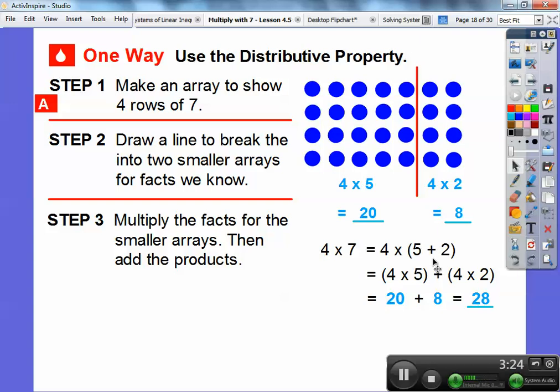We drew a line right there to break it into two smaller arrays and then we can find those smaller products. So, four times seven is still twenty-eight.